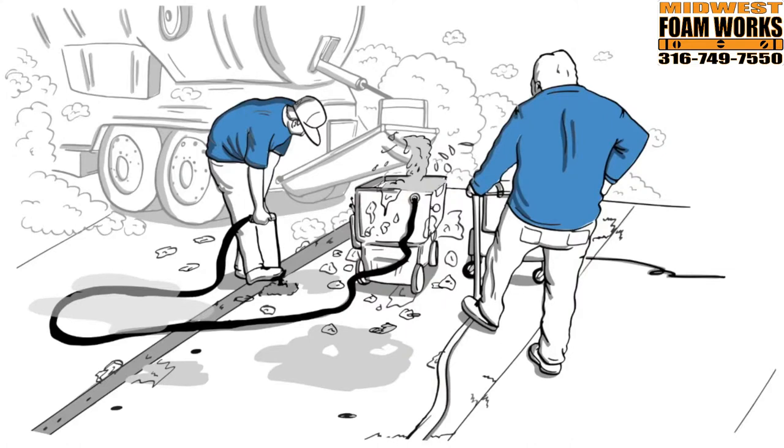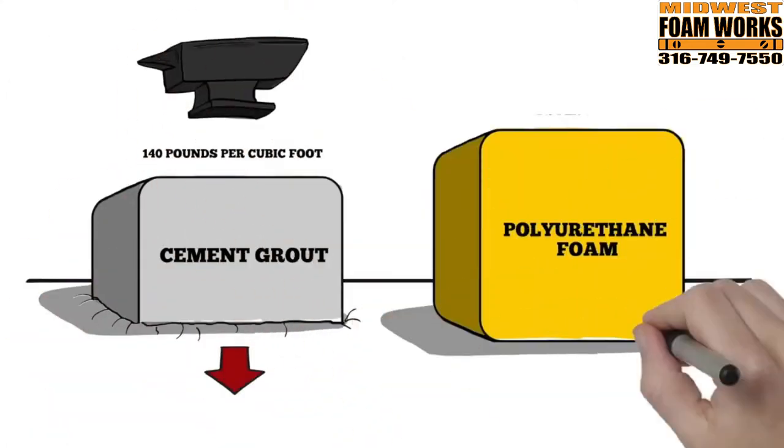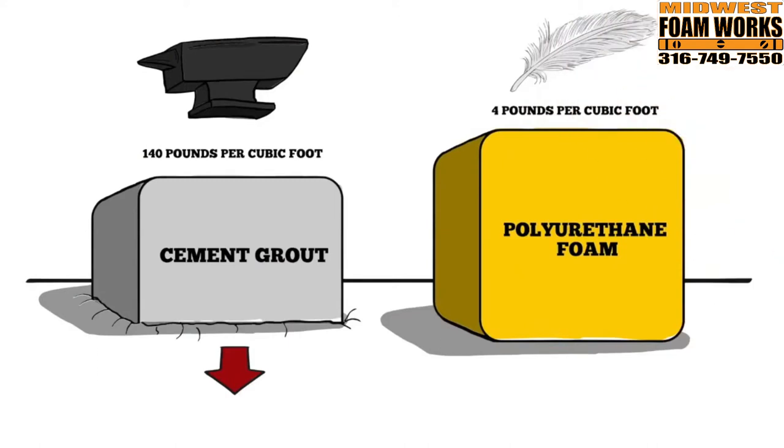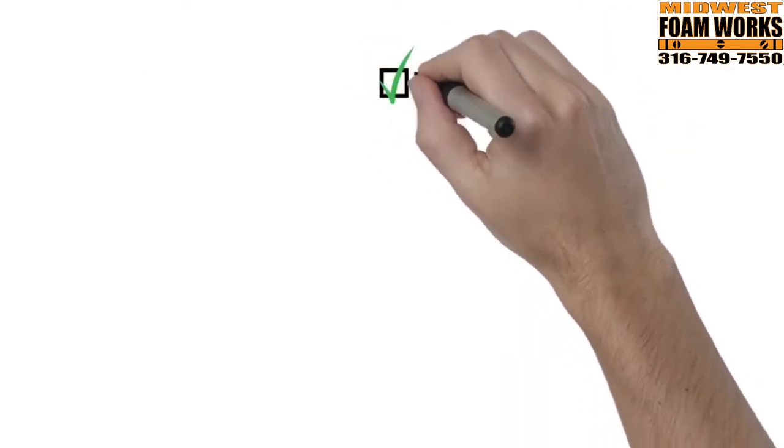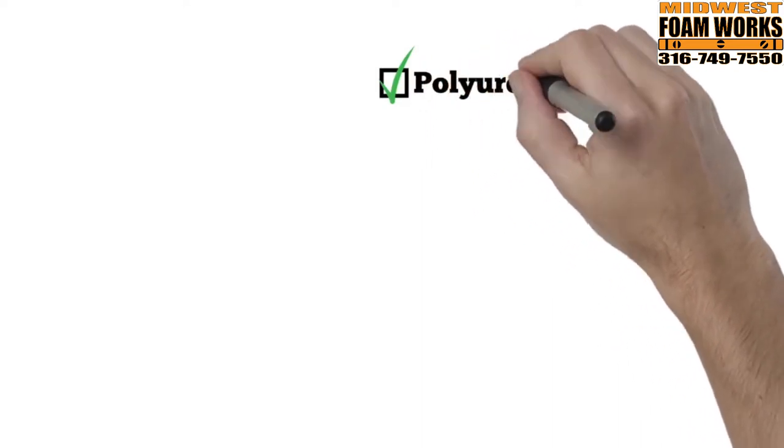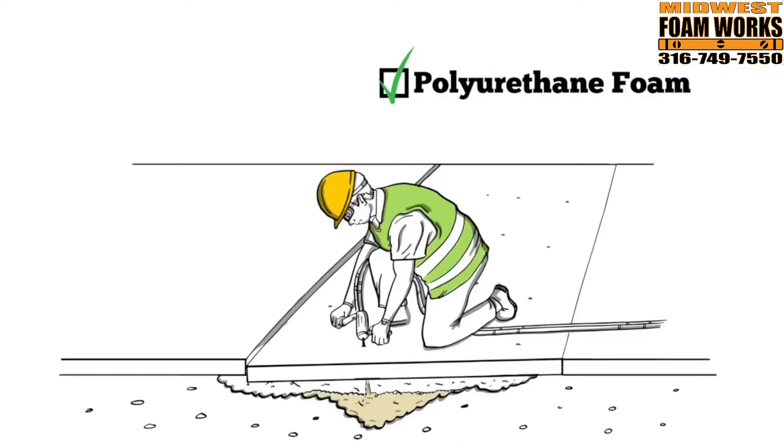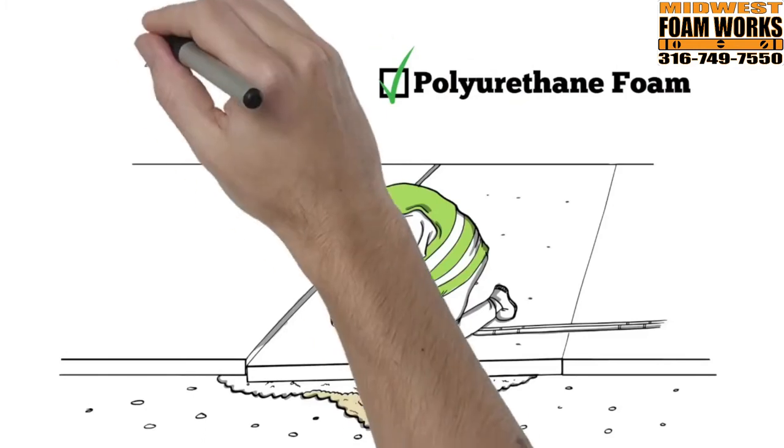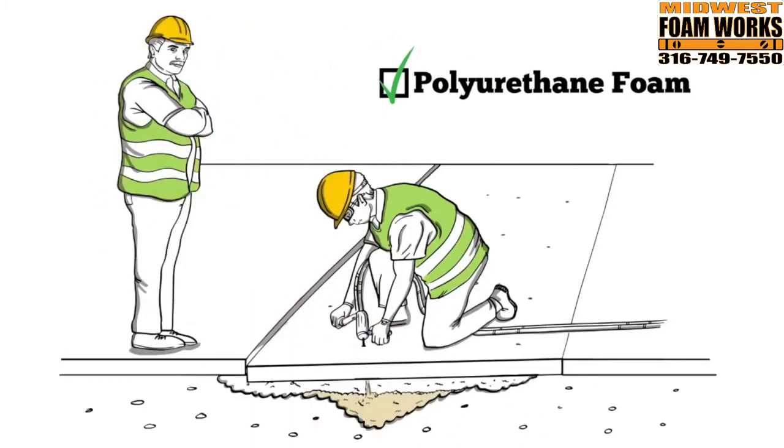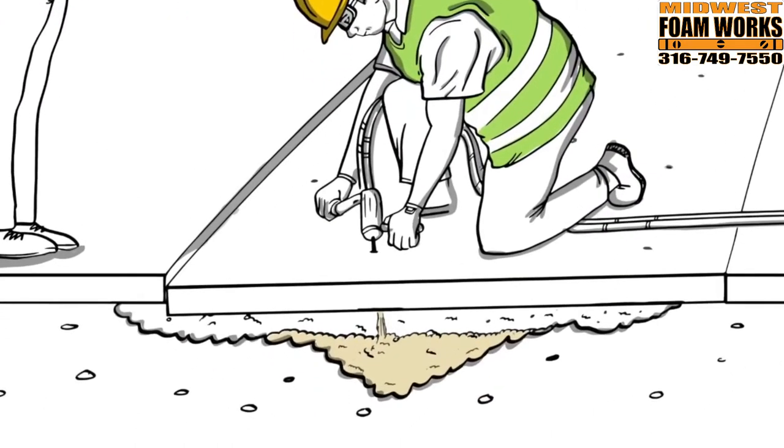Because cement is much heavier than polyurethane, it's likely to sink again over time. Instead, there's a better solution. It's less messy and far more durable than mud jacking, and can be done at a fraction of the cost of replacement. Plus, it's so easy to install that sometimes a crew of one to two people can do it.